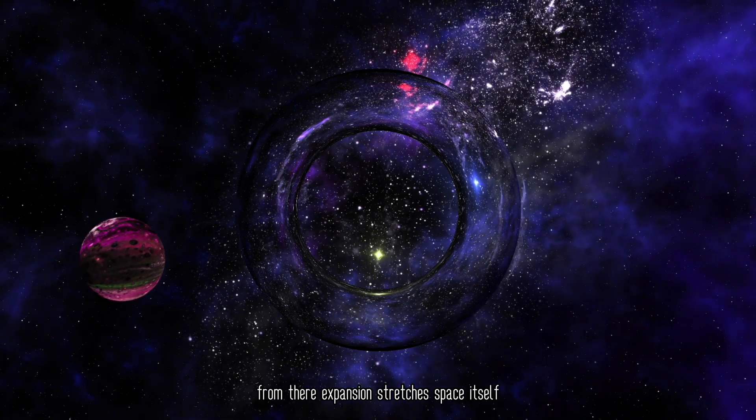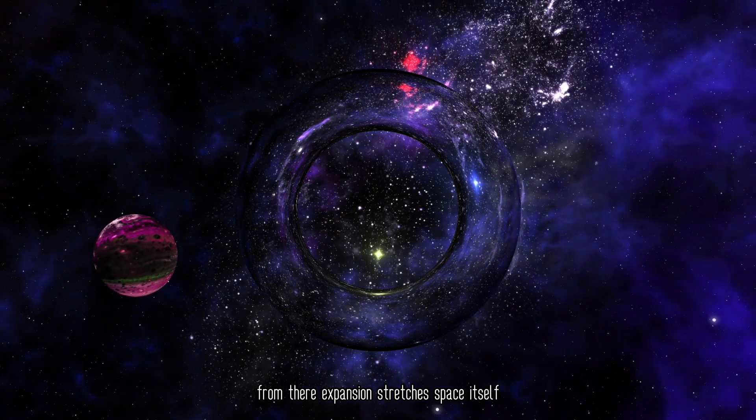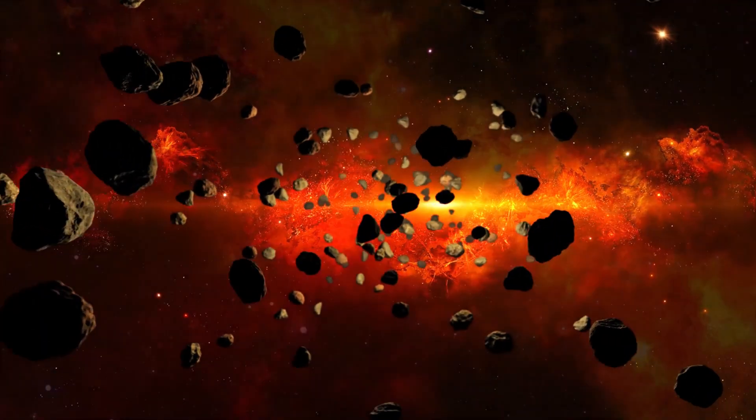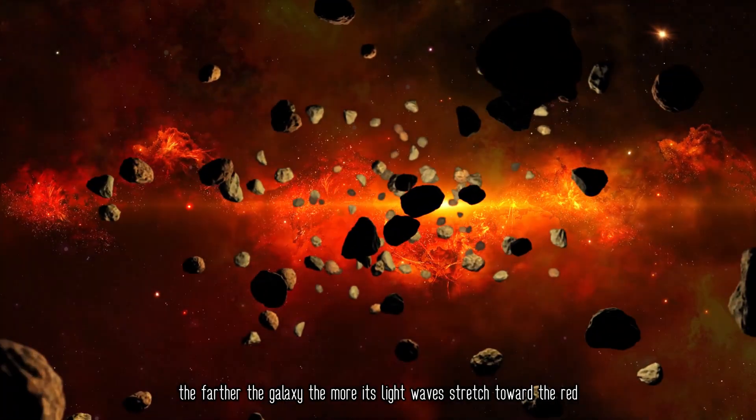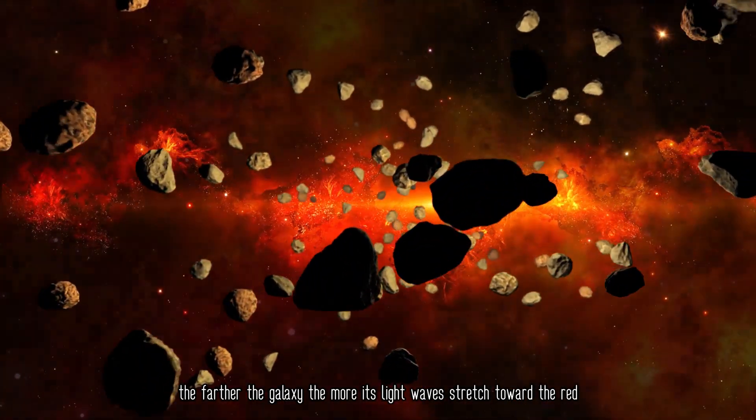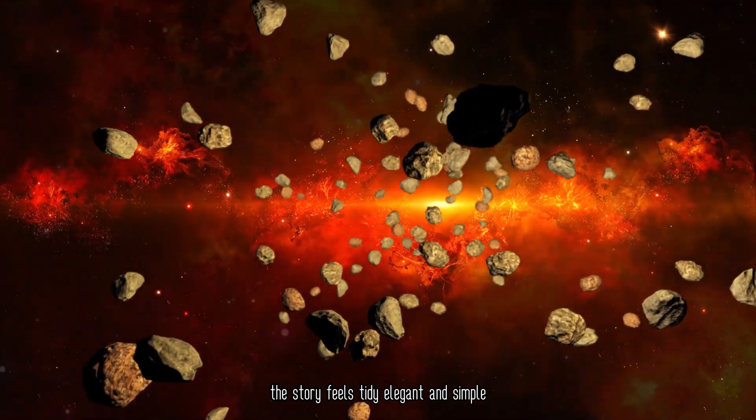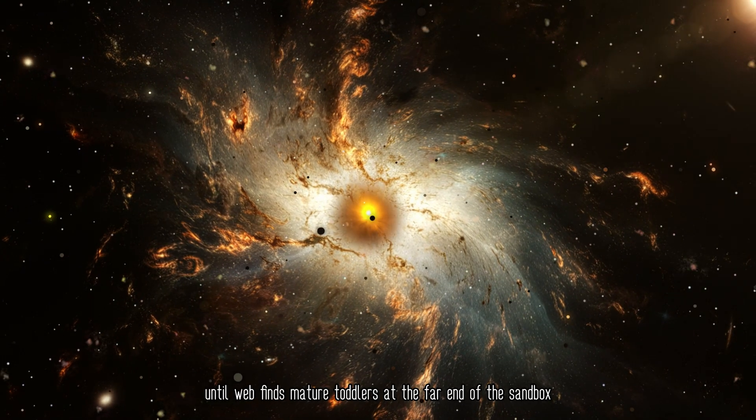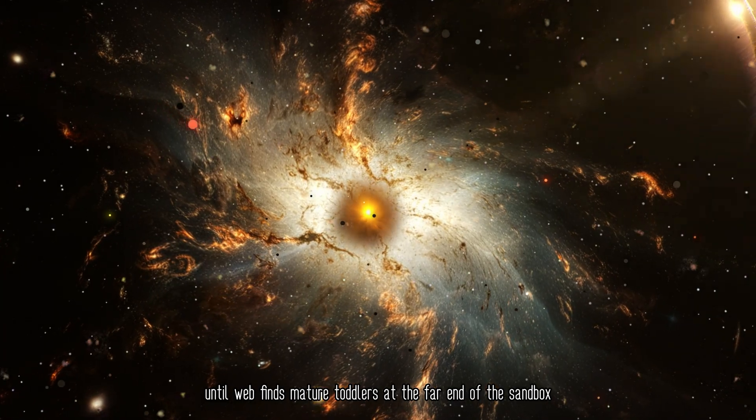The cosmic microwave background is the flash photo of that liberation day. From there, expansion stretches space itself, and we measure distance and time using redshift. The farther the galaxy, the more its light waves stretch toward the red. The story feels tidy, elegant, and simple—until Webb finds mature toddlers at the far end of the sandbox.